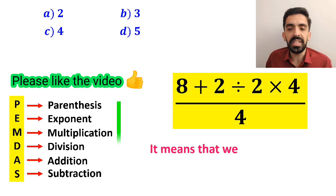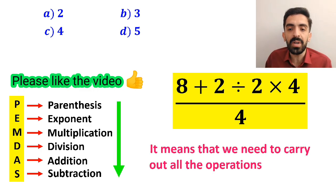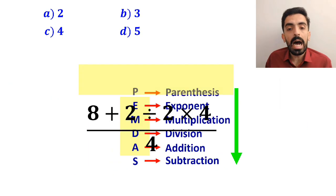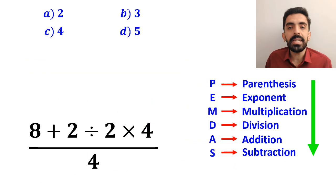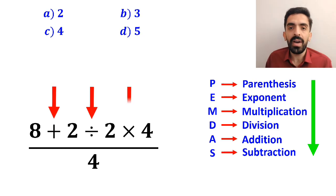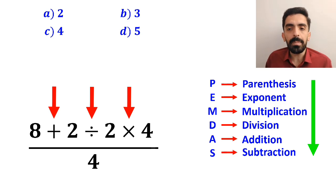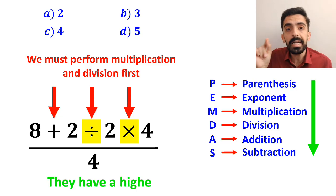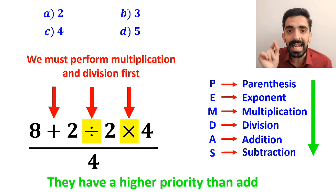PEMDAS means that we need to carry out all the operations from top to bottom in order. As you can see in the image, in the numerator of this fraction, we have an addition sign, then a division sign, and finally a multiplication. According to the PEMDAS rule, we must perform multiplication and division first because they have a higher priority than addition.